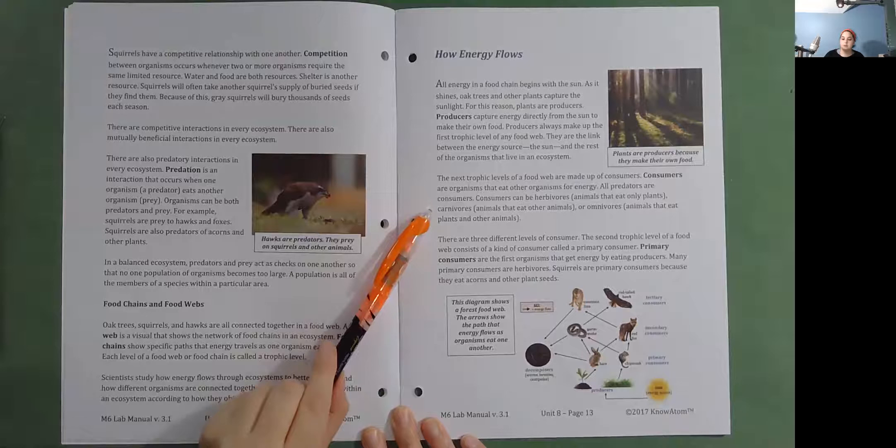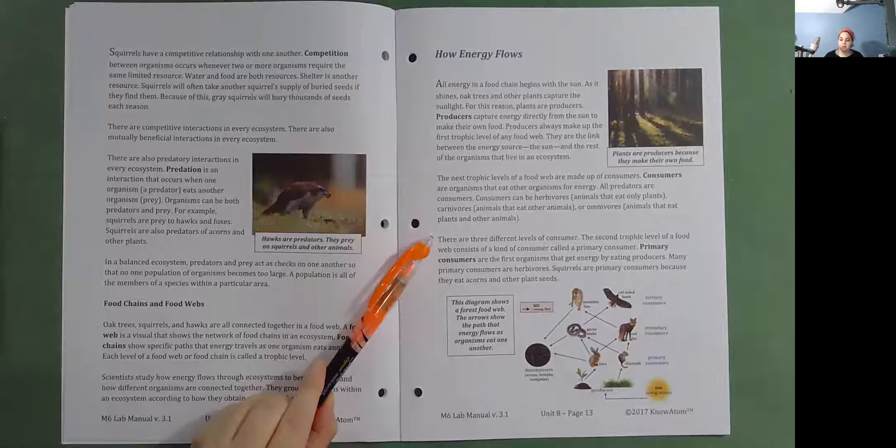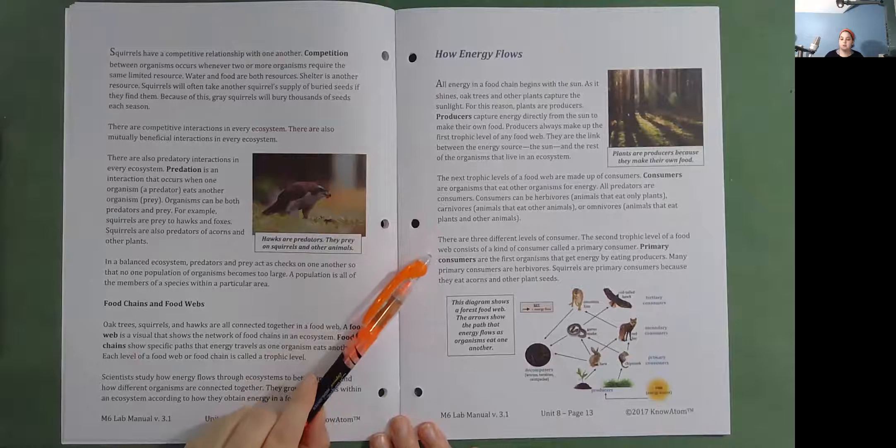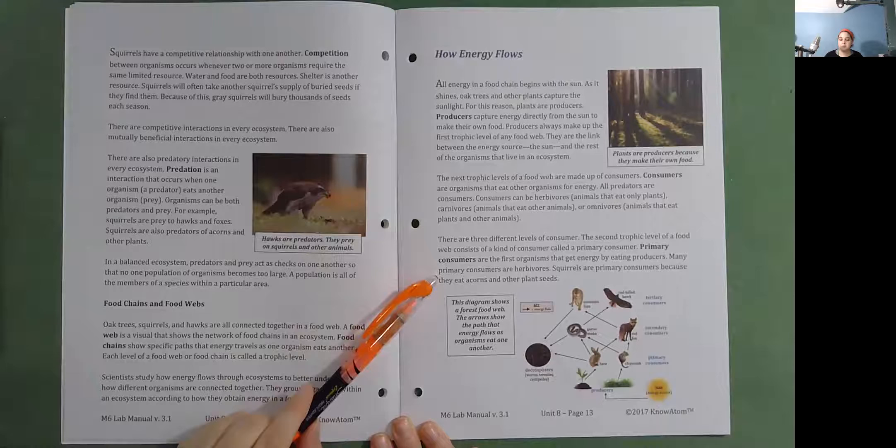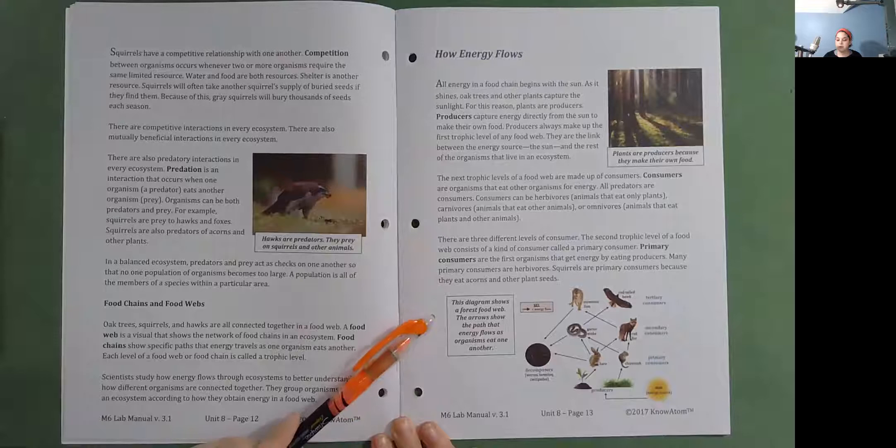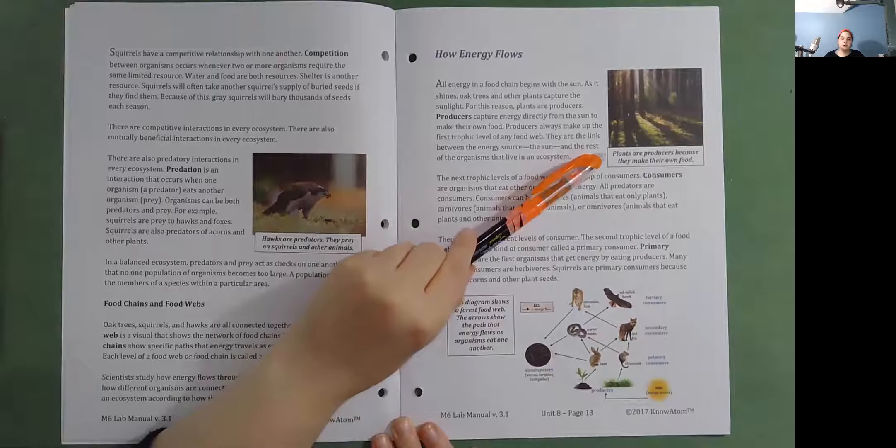Consumers can be herbivores, animals that eat only plants; carnivores, animals that eat other animals; or omnivores, animals that eat plants and other animals. There are three different levels of consumer. The second trophic level of a food web consists of a kind of consumer called a primary consumer. Primary consumers are the first organisms that get energy by eating producers. Many primary consumers are herbivores. Squirrels are primary consumers because they eat acorns and other plant seeds. This diagram shows a forest food web. The arrows show the path that energy flows as organisms eat one another. Plants are producers because they make their own food.